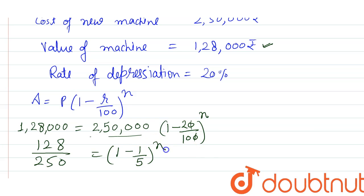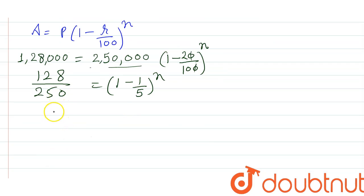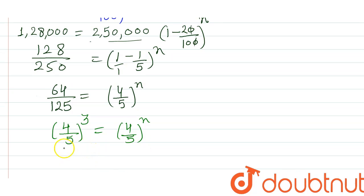This becomes 64 over 125 equals (4/5) to the power n. We can write (4/5)³ here, and this equals (4/5) to the power n.